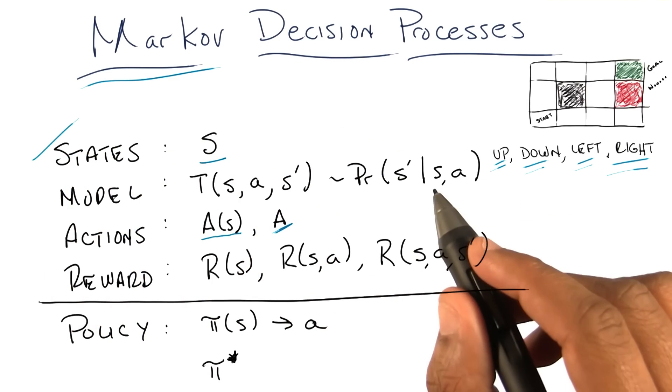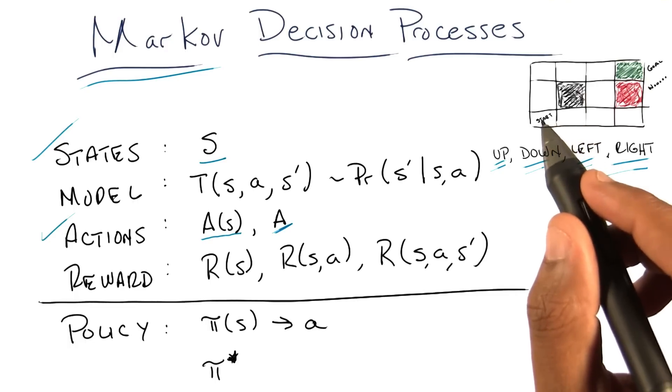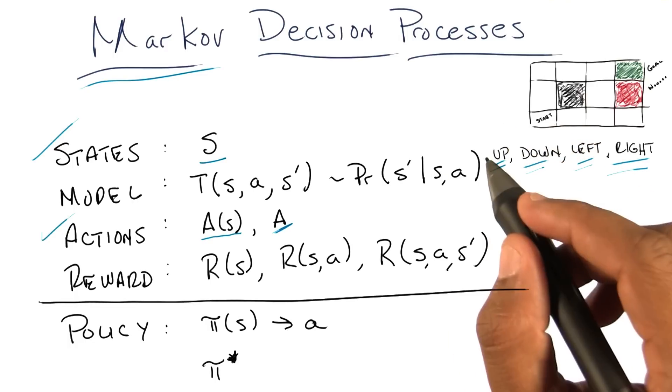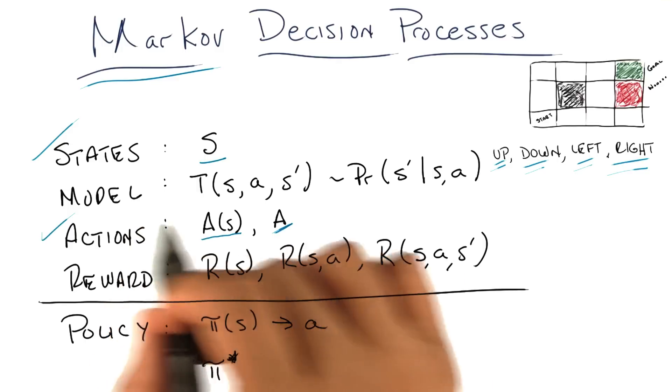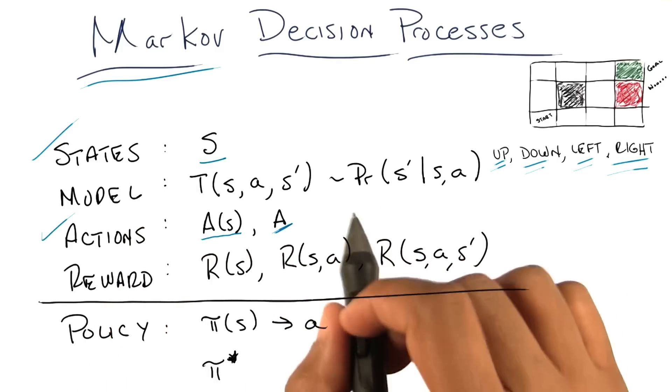All right, so we understand states. They're the things that describe the world. We understand actions. Those are the things that you can do, the commands you can execute when you're in particular states. And what a model describes, what the transition model describes, is in some sense the rules of the game that you're playing. It's the physics of the world.